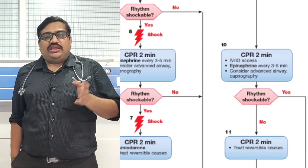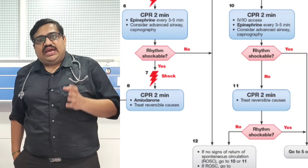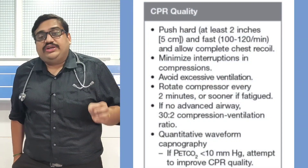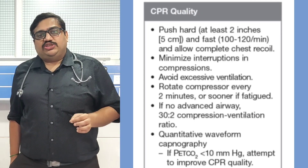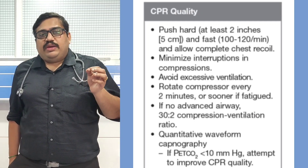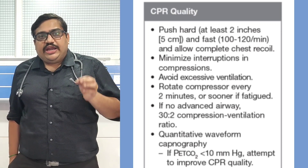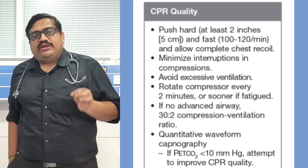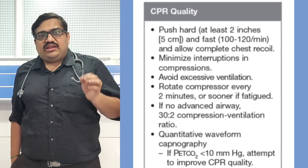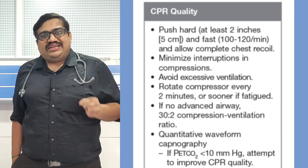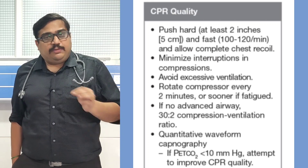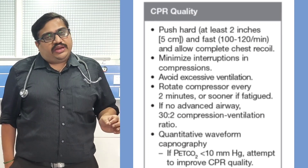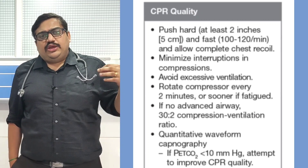If it is a non-shockable rhythm — otherwise called asystole or pulseless electrical activity — you continue your CPR. Make sure you have good quality CPR: push hard and push fast, giving a minimum of 100 to 120 compressions per minute, compressing at least 2 inches and allowing adequate chest recoil. Minimize interruptions to not more than 10 seconds. If you have an ETCO2 monitor connected and it shows an ETCO2 of less than 10 mmHg, you need to improve the quality of CPR.